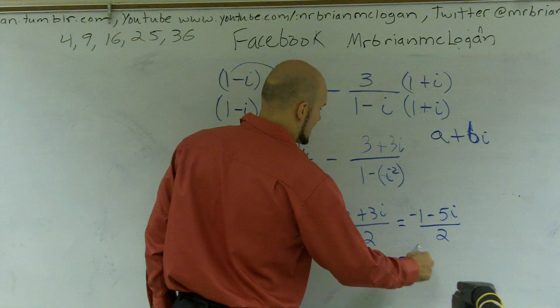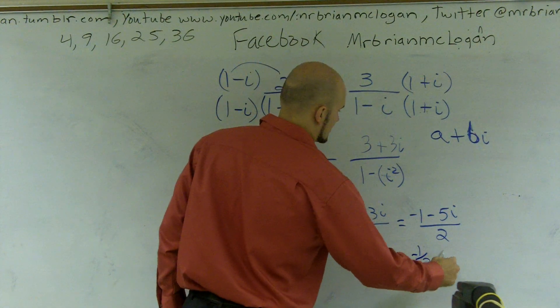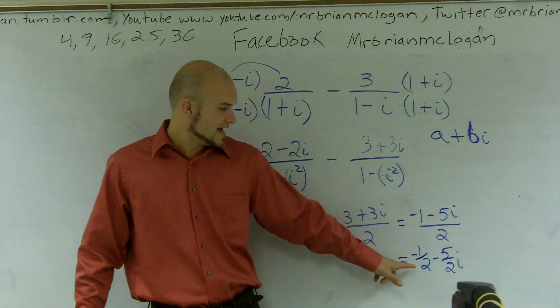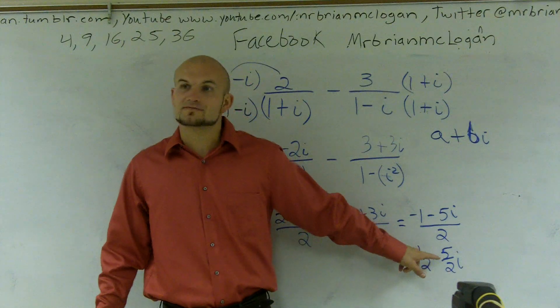So what I can actually get is a negative one half minus five halves i. Where negative one half is a and negative five halves is b.